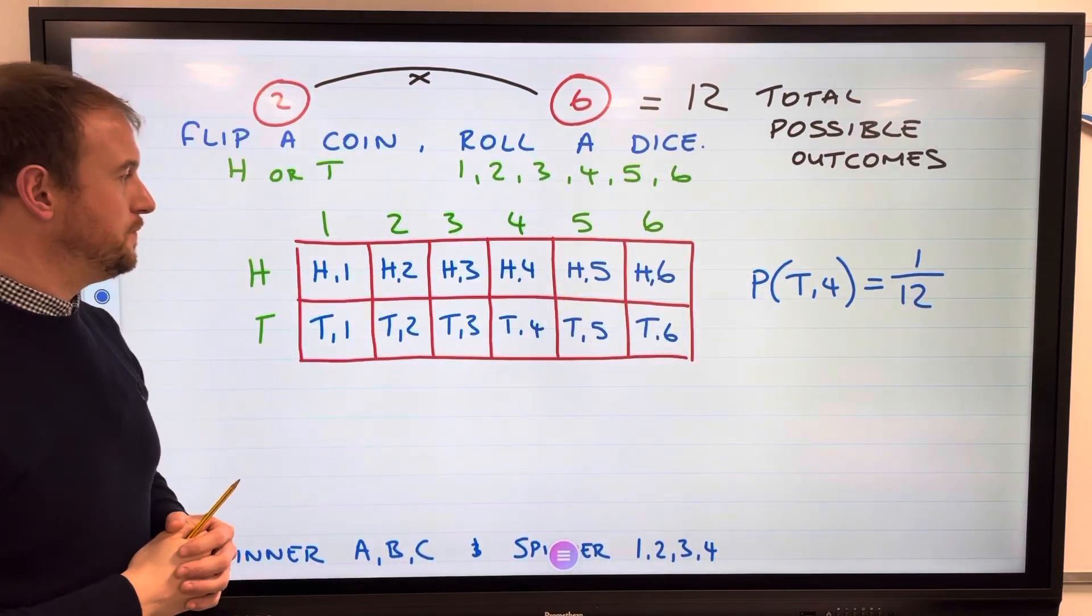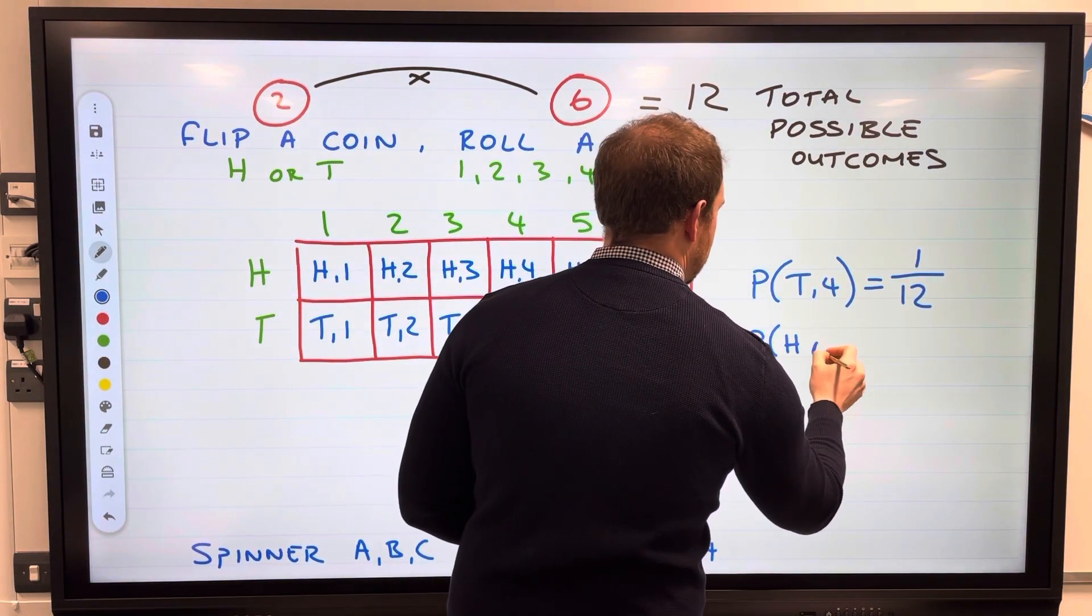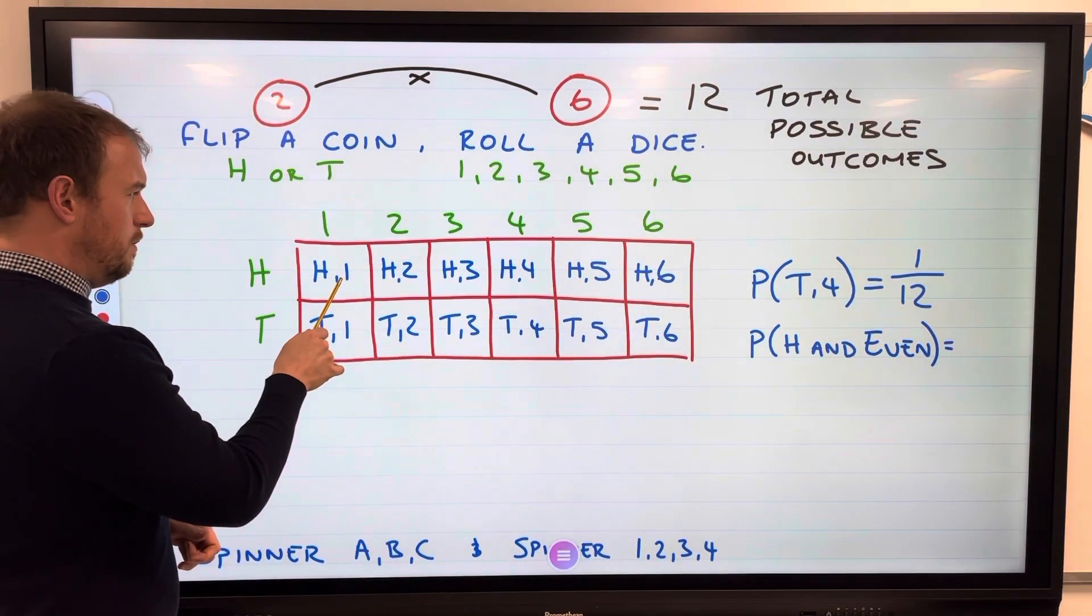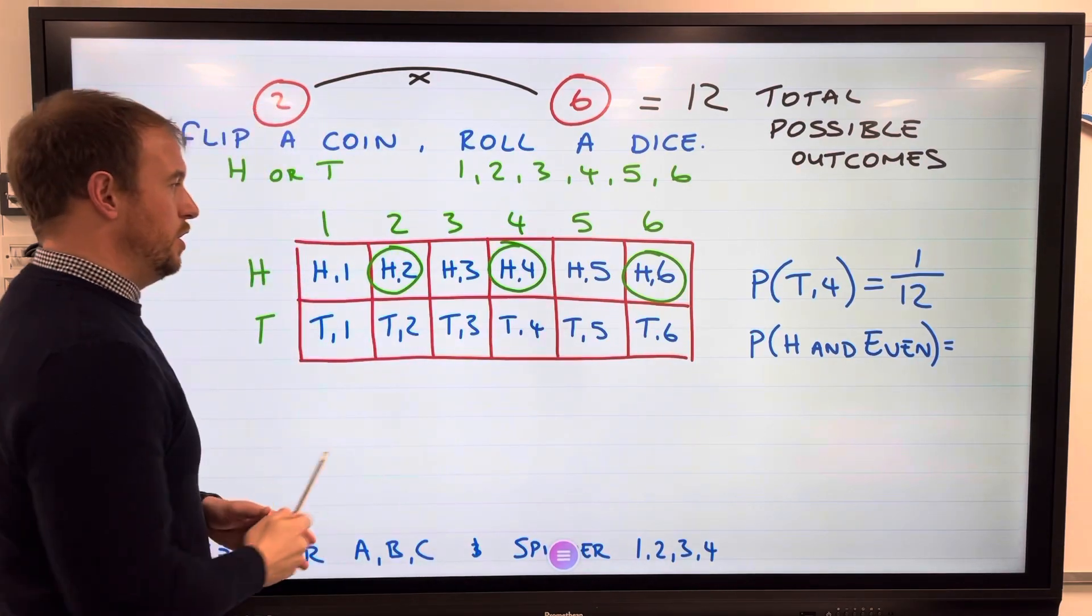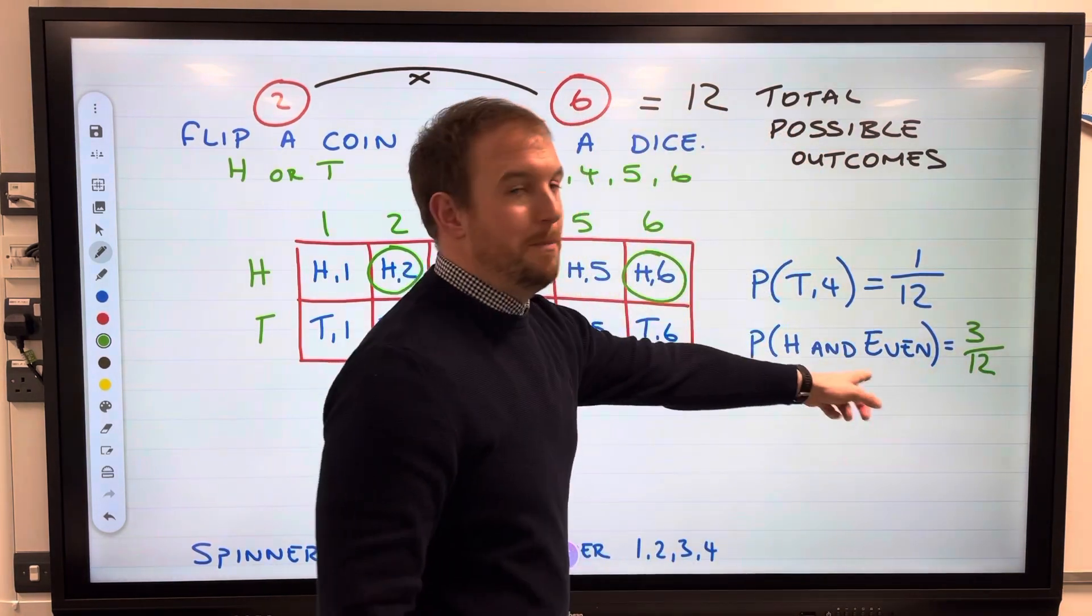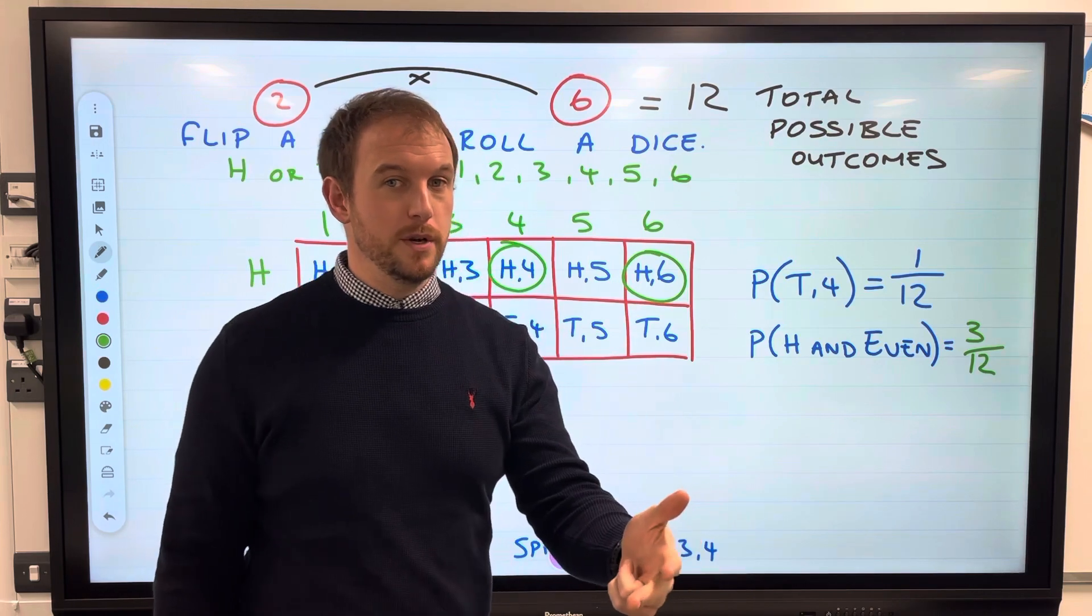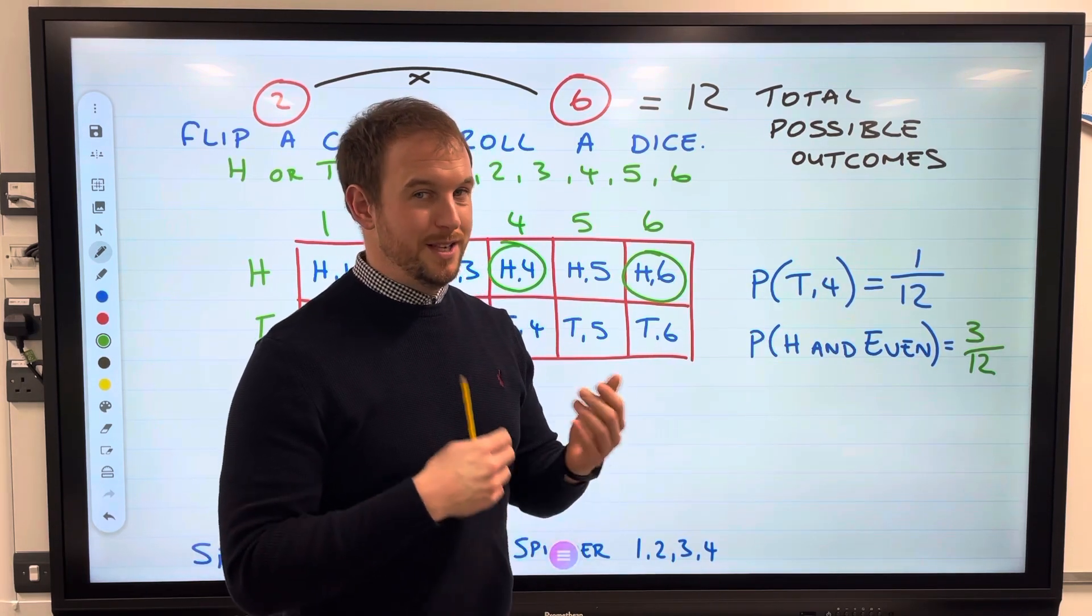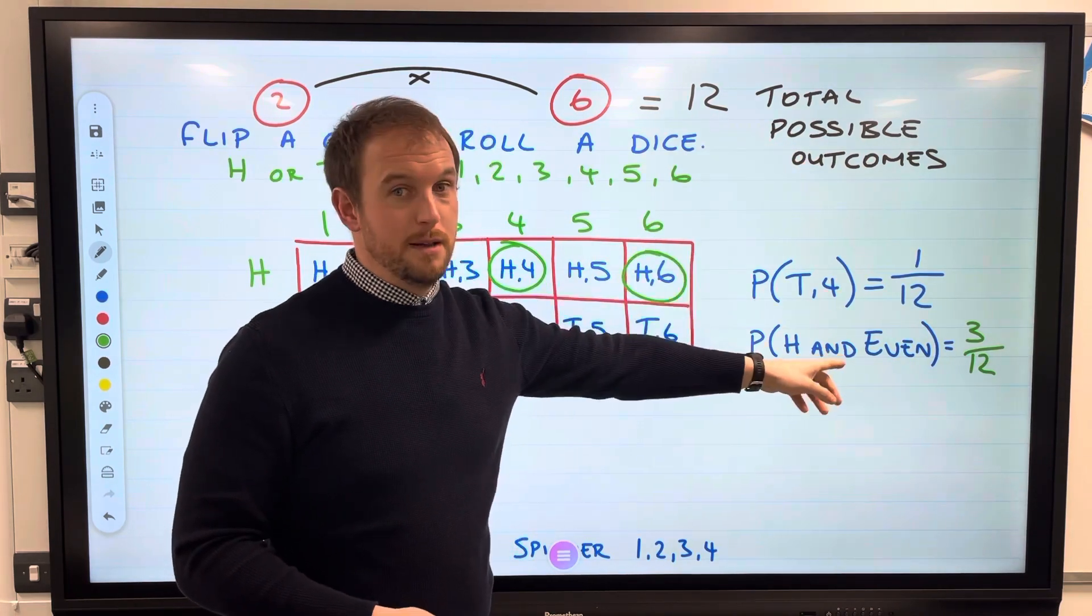It could also be the probability of landing on a head and an even number. So head and even - there's one there, one there, one there, and one there. We have three out of twelve possible outcomes. Be careful here. It could say prime number, square number, maybe even cube numbers. You need to be quite fluent with the properties of number in order to help you with probability. We've used that total possible outcomes a few times here with our fractions.